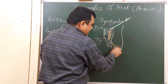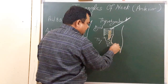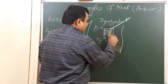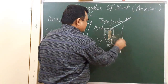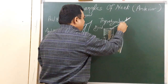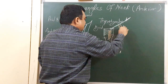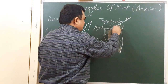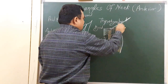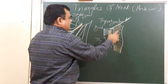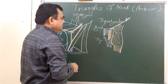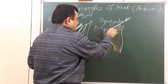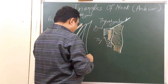This is the esophagus, this is the pharynx, and this is the inferior constrictor of the pharynx. This is the middle constrictor of the pharynx. Here is the position of the thyrohyoid muscle.